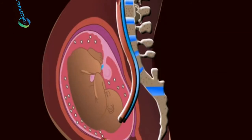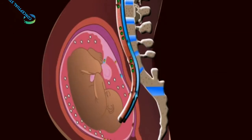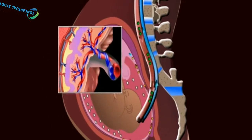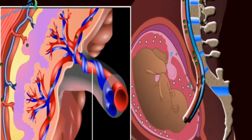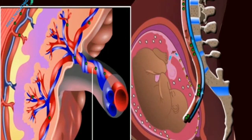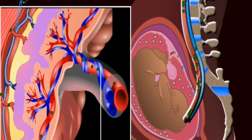The placenta is connected to the embryo through an umbilical cord. The part of placenta contributed by the fetus is called fetal placenta, while the part formed by the mother is called maternal placenta.